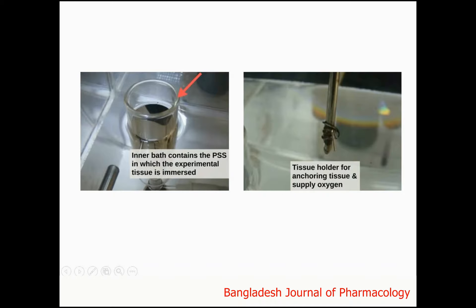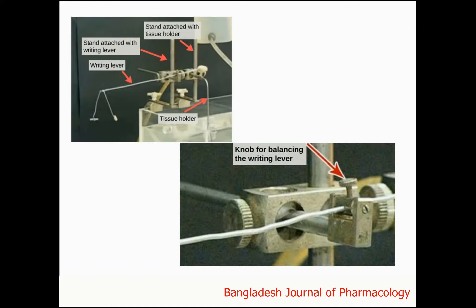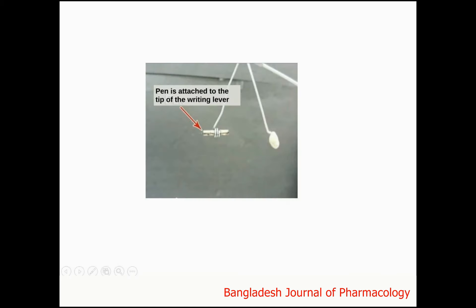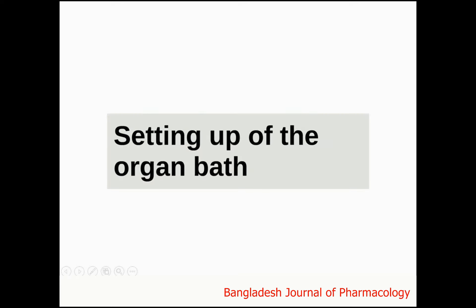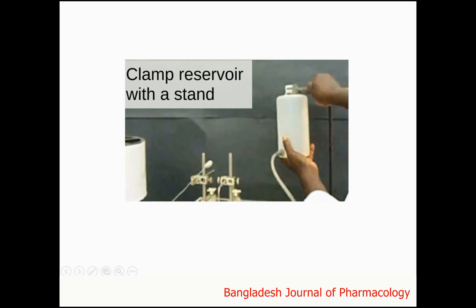There is a tissue holder for anchoring the tissue and supplying oxygen. The stand is attached with tissue holder and writing lever. This is the knob for balancing the writing lever. The pen is attached to the tip of the writing lever. Next, we shall discuss the setting up of the organ bath: clamp the reservoir with a stand.